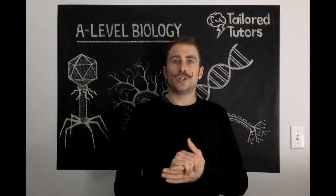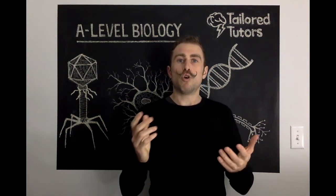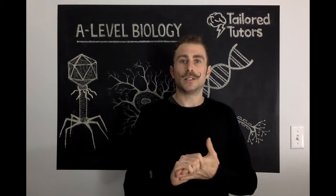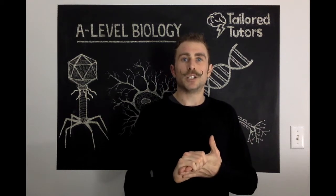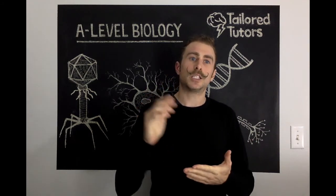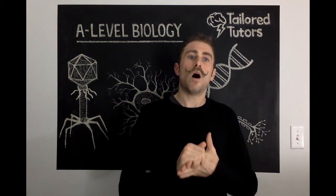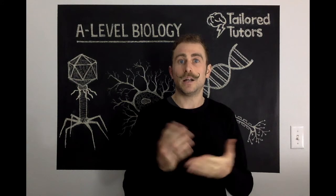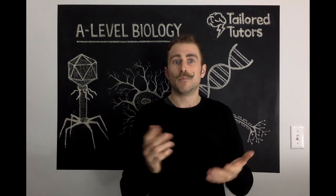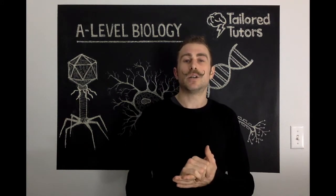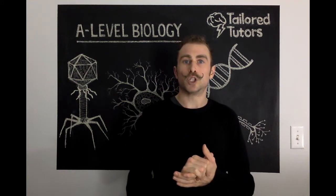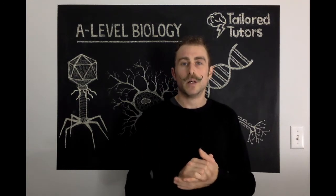Mariam has asked a question on the tropisms tutorial from the ultimate guide to A-level biology. She asked: why does indoleacetic acid (IAA) move to the shaded side of the root or shoot in phototropism?